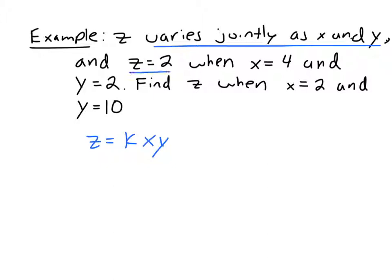And z equals 2 when x equals 4 and y equals 2. So let's use that to find what k equals. So instead of writing z, I should write 2. 2 equals k times 4 times 2. So 2 equals k times 8. Divide both sides by 8. 2 over 8 equals k, which is the same thing as 1 over 4 equals k.